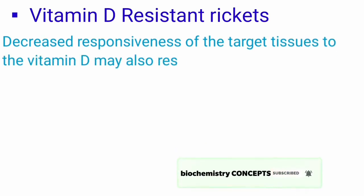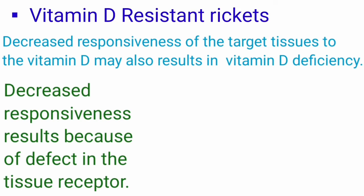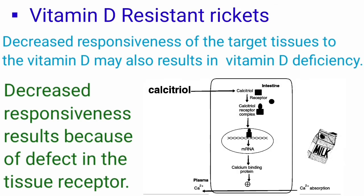Vitamin D resistant rickets: As the name indicates, this disease does not respond to treatment with vitamin D. This is due to defective vitamin D receptors. Vitamin D is present, but it cannot mediate its action by increasing gene expression. Without functional receptors, vitamin D cannot bind and cannot mediate expression of the gene responsible for producing calcium binding protein. Calcium binding protein is involved in calcium absorption from the intestine; without it, calcium is not absorbed and bones are not properly formed, leading to rickets.